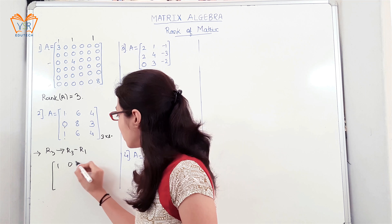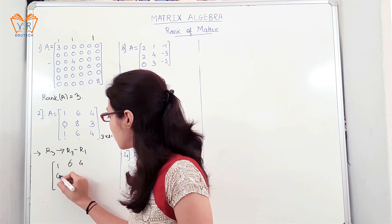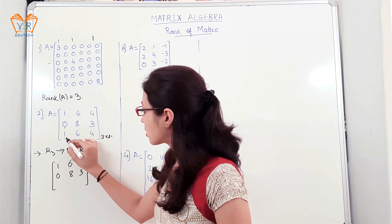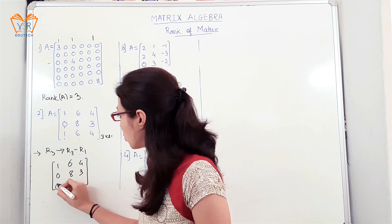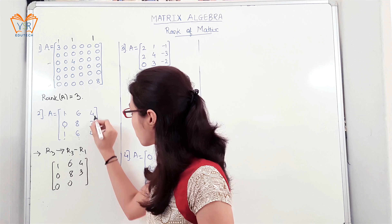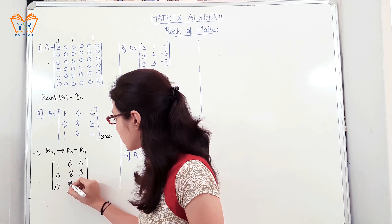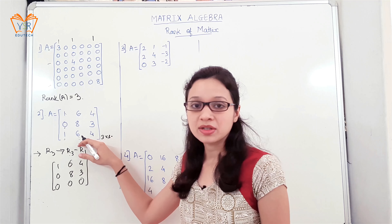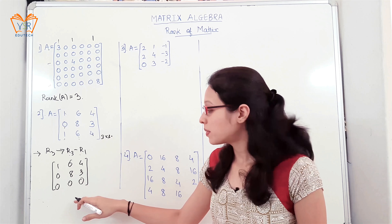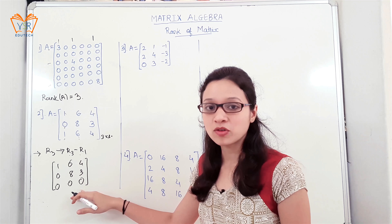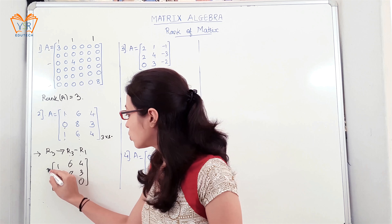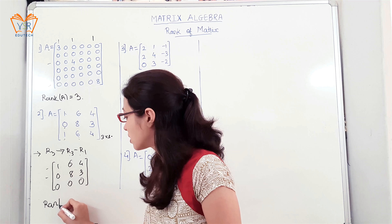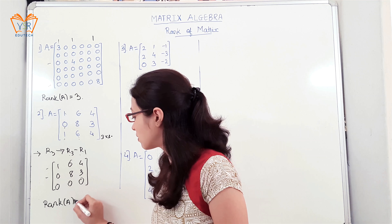We will write the first and second row as they are, since we are performing the elementary operation on row 3. R3 minus R1: 1 minus 1 gives 0, 6 minus 6 gives 0, 4 minus 4 gives 0. We have converted the given matrix into upper triangular matrix. Once we have obtained the upper triangular matrix, no further elementary operations can be performed. Here there are two rows that are linearly independent, so the rank of matrix A is equal to 2.